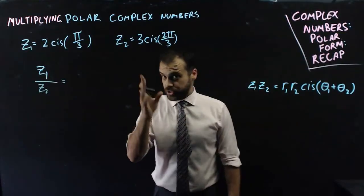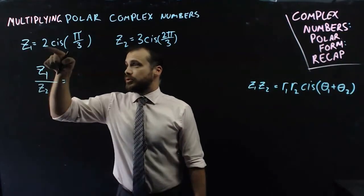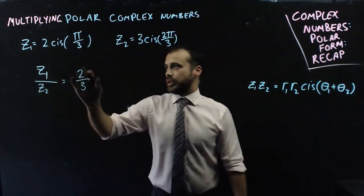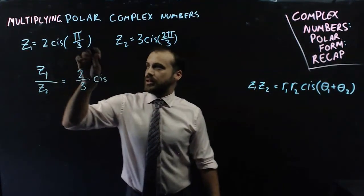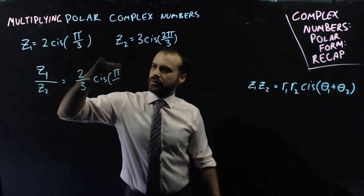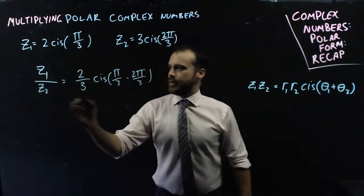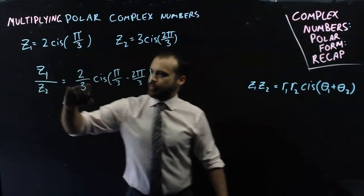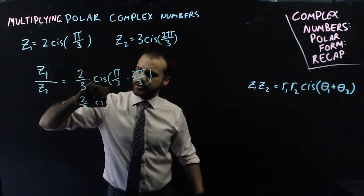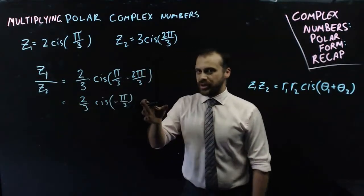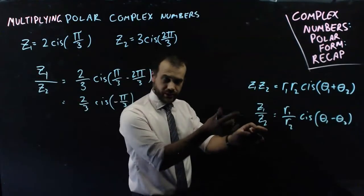Let's do division. Now this is going to work just how you'd expect it to as well. 2 divided by 3. So our r's divided by each other. And then cis angle minus angle. And of course we should clean that up a bit. 2 on 3. 2 pi on 3. Cis, negative pi on 3. A formula right here.